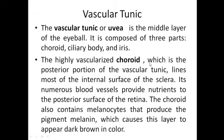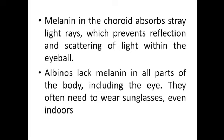The middle vascular tunic, or uvea, is the middle layer of the eyeball and is composed of three parts: the choroid posteriorly, the ciliary body, and the iris. The highly vascularized choroid lines most of the internal surface of the sclera. Numerous blood vessels provide nutrients to the posterior surface of the retina. The choroid also contains melanocytes that produce the pigment melanin, causing this layer to appear dark brown in color. Melanin in the choroid absorbs stray light rays, preventing reflection and scattering of light within the eyeball.